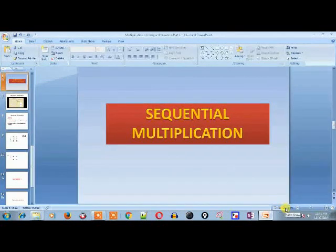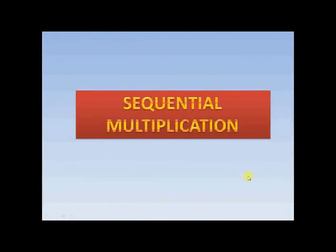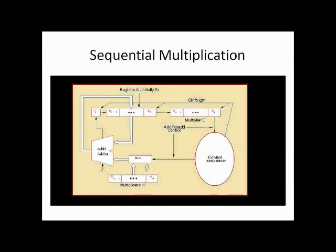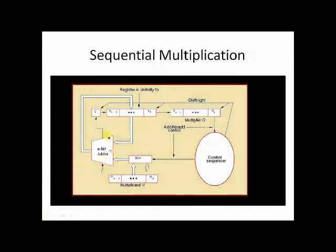Hey everyone, this is Professor Jay from Jay Academy and today I am going to do sequential multiplication. First of all I am going to tell you about the circuit that we are having. Here we have got three registers: A, Q, and M. Register A will be initially 0, it is an n-bit long register. Register Q is going to hold the multiplier and register M is going to hold the multiplicand.